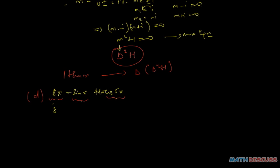For 8x, we don't really need the constant — it's the x we need. The power here is 1, so the operator is going to be D squared. And then for sine(x), we just found that the annihilator is D squared plus 1.